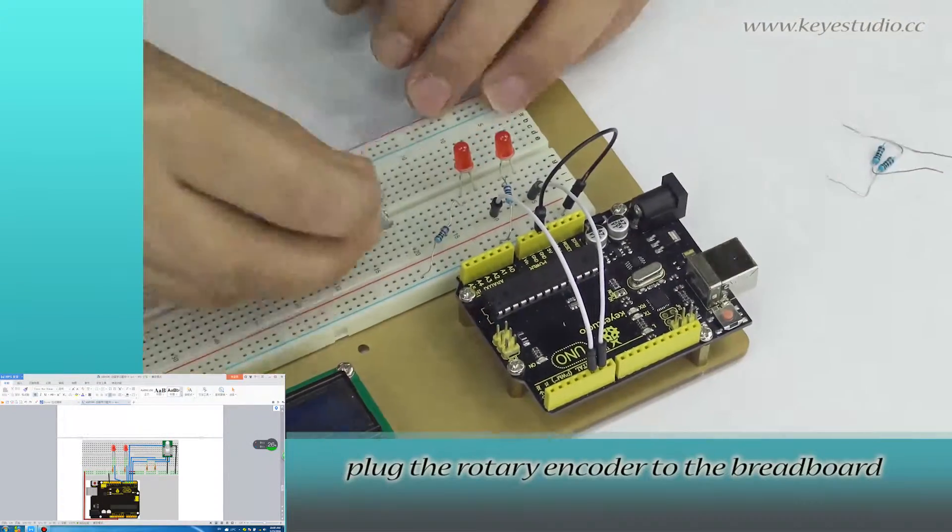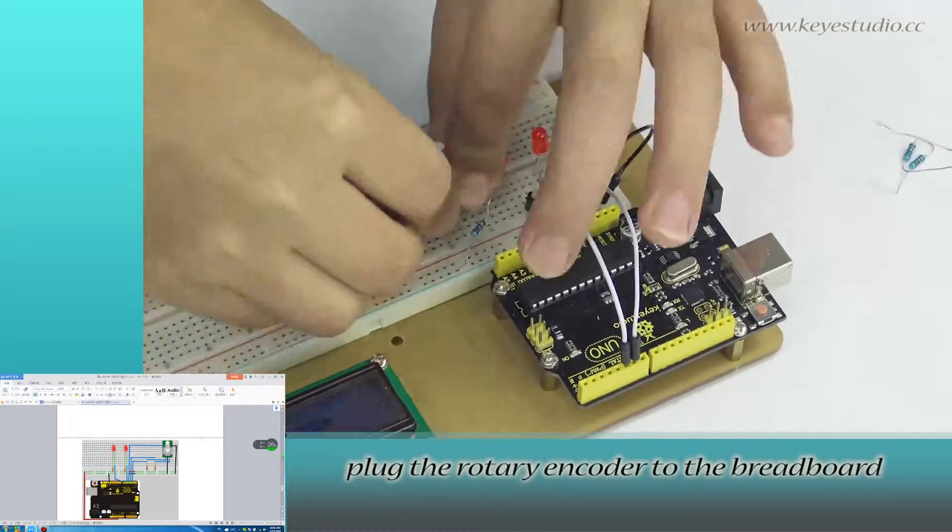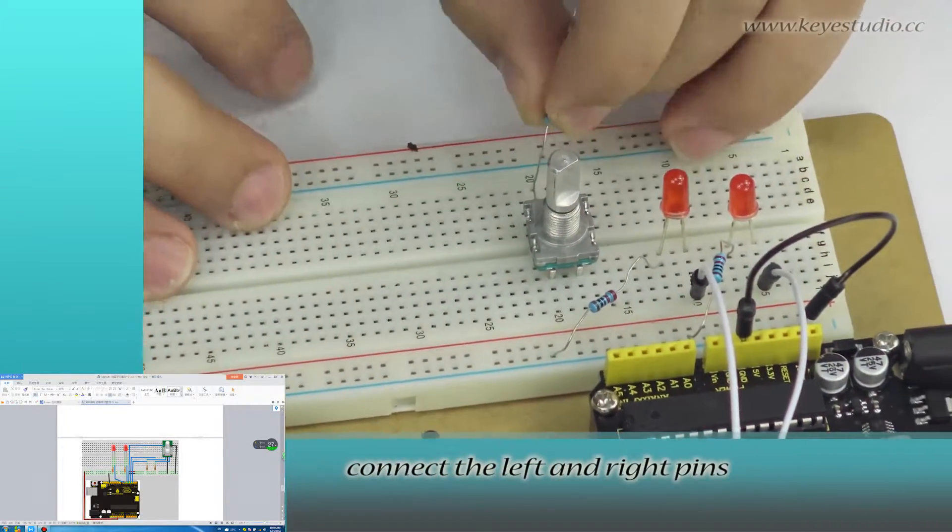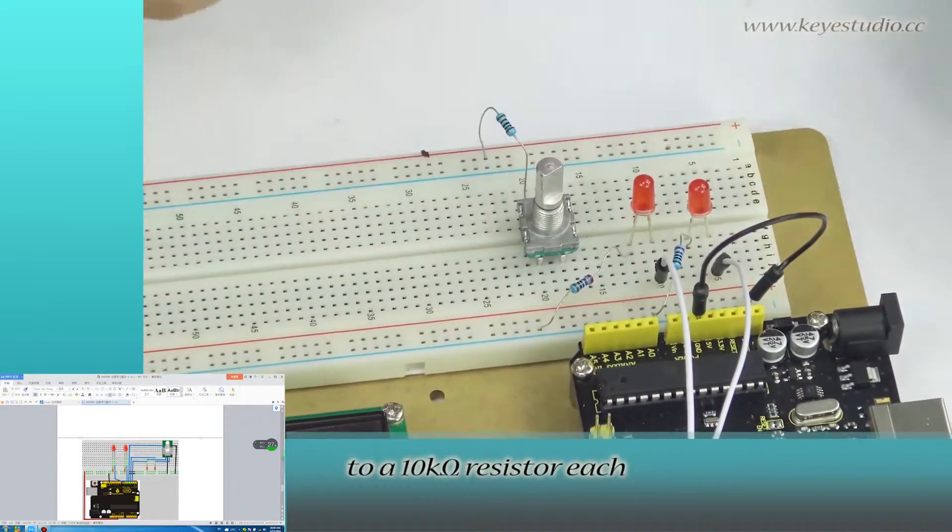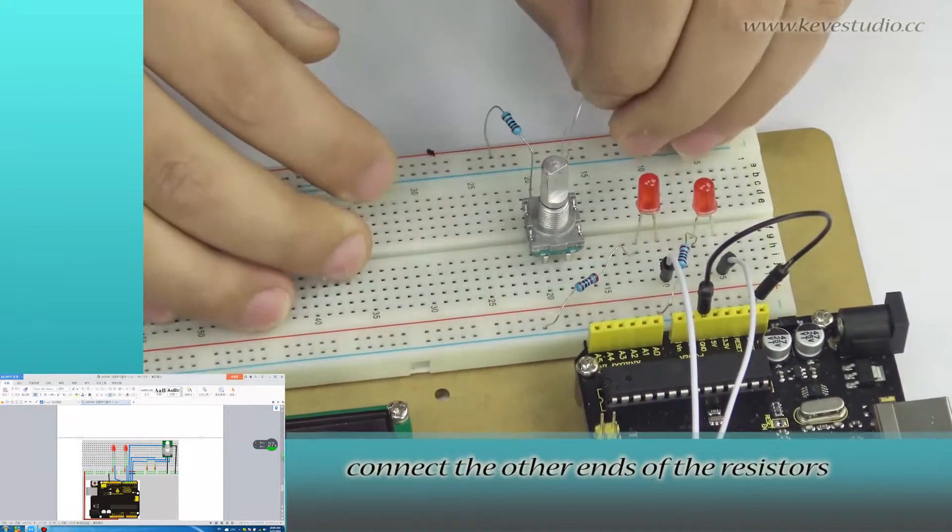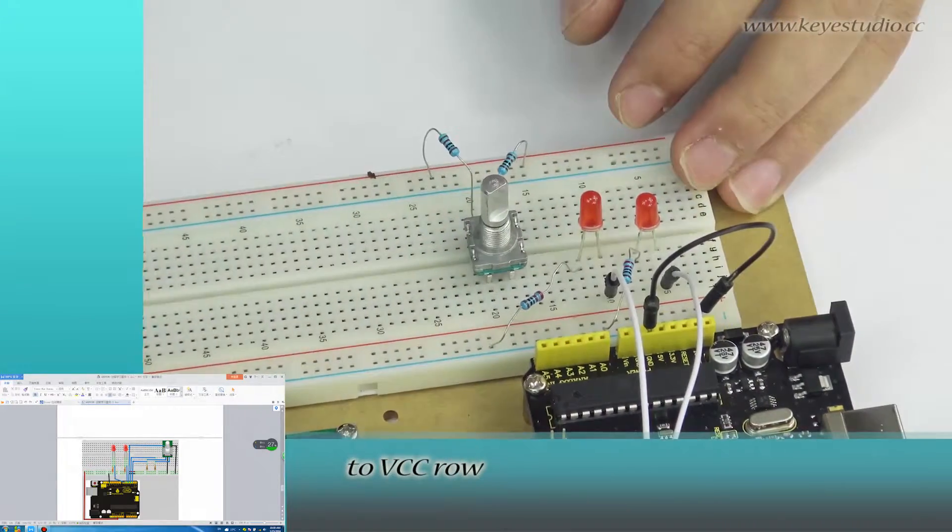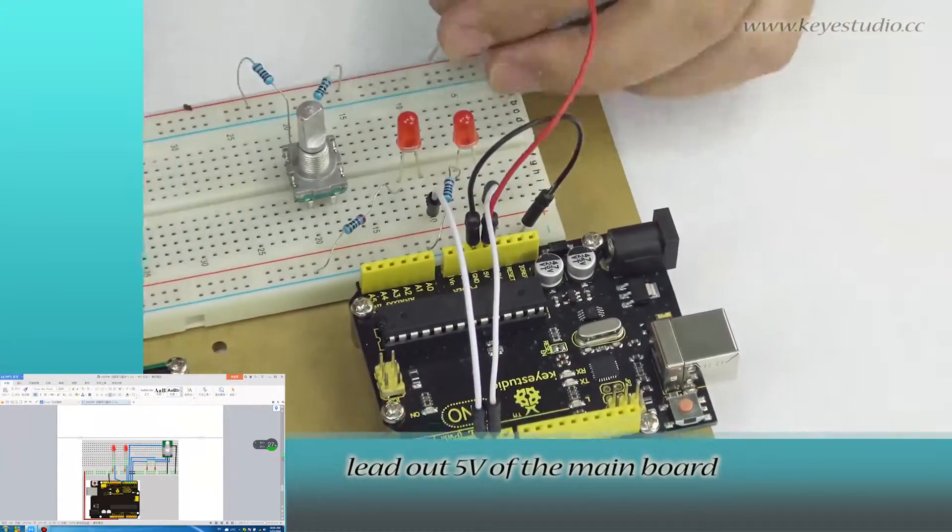Plug the rotary encoder to the breadboard. For the side with three pins, connect the left and right pins to a 10 ohm resistor each. Connect the other ends of the resistors to VCC rail. Lead out 5V of the main board.